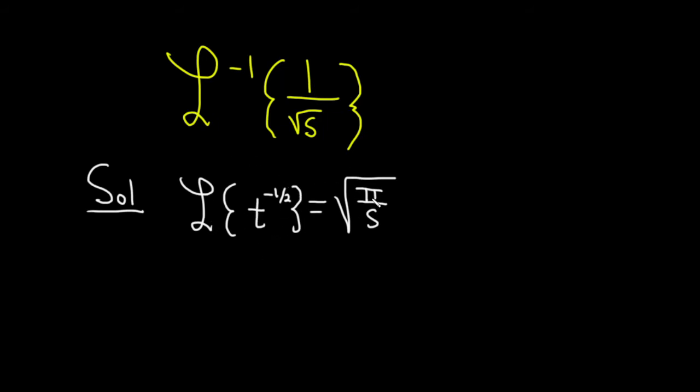Laplace takes this and sends it to this. That means that the inverse Laplace undoes that. The inverse Laplace transform of the square root of pi over s. This is going to go back to t to the negative one-half, right? Because if the Laplace takes this and sends it to this, the inverse Laplace takes this and sends it back to this.